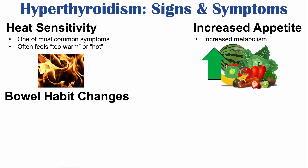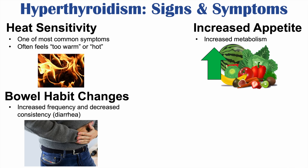We can also see bowel habit changes — more specifically, increased frequency and decreased consistency of stools. Increased levels of thyroid hormones increase the movement of the gastrointestinal system, leading to increased frequency of bowel movements and decreased stool consistency, which translates into diarrhea. Patients with hyperthyroidism often experience diarrhea as well.